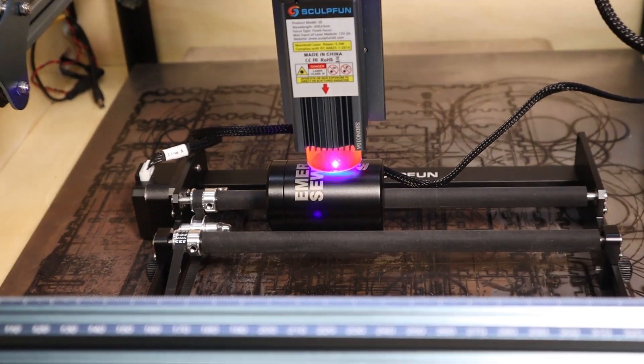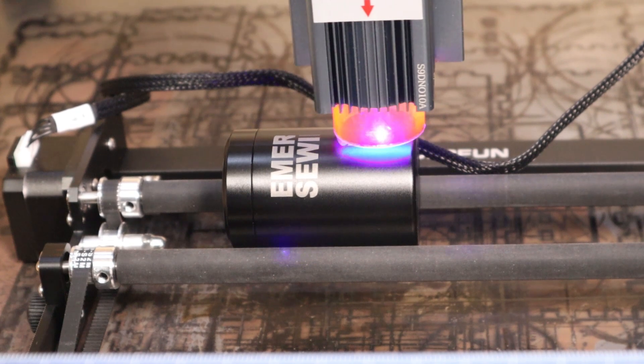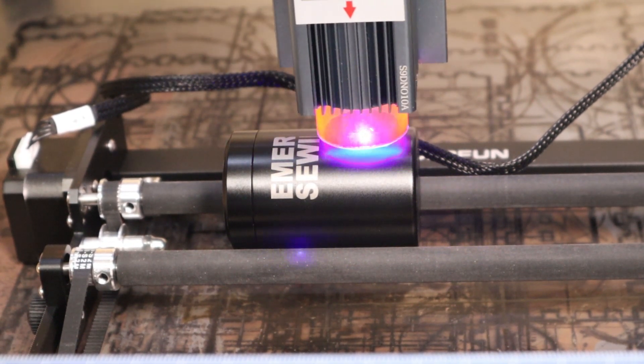Let's see what this thing can do. First, I tried to engrave a black anodized aluminum storage can. Black anodized aluminum is perfect for high quality engravings.